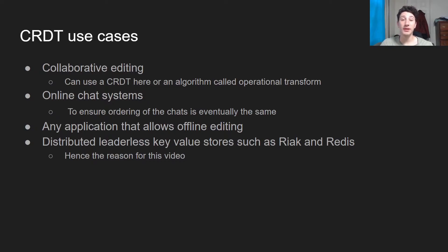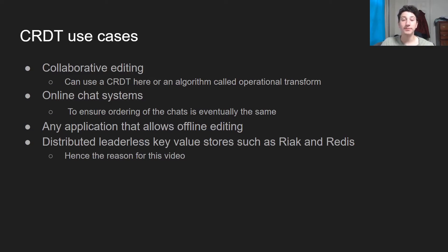In terms of collaborative editing — like Google Drive, Figma, Office 365 — being able to create a list of items from a multi-leader replication setup is really useful and not something that's super easy. There are a ton of challenges involved, and it's still a very much ongoing research topic. You can also use an algorithm called Operational Transform for this type of thing, but that's a topic for another video.